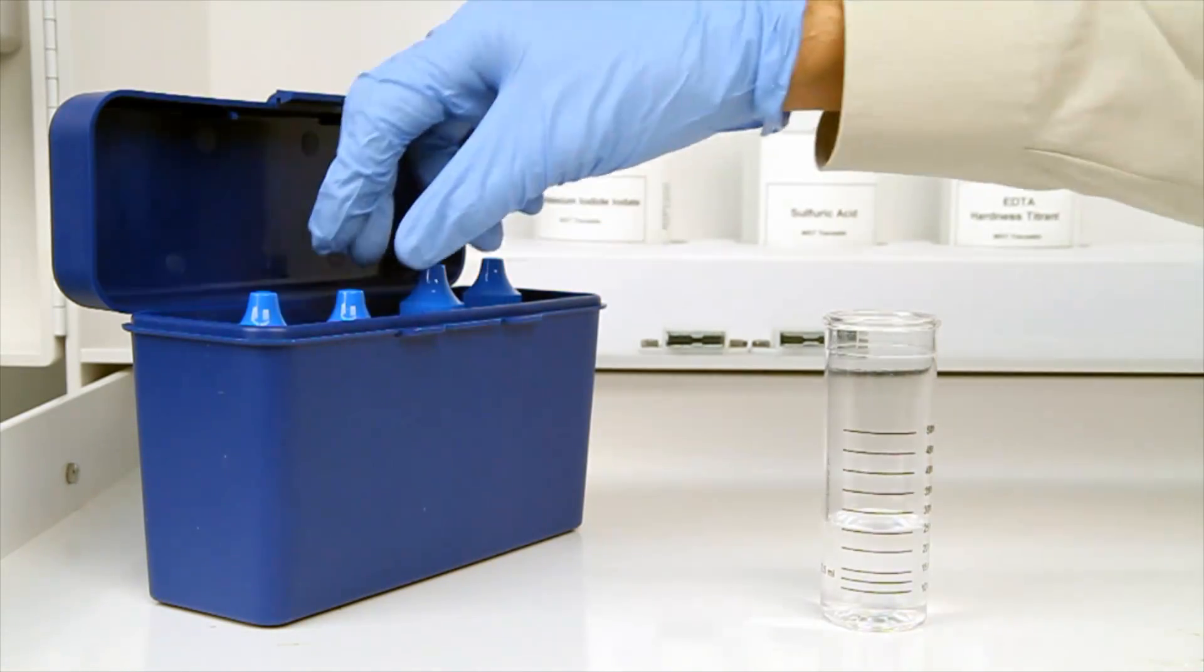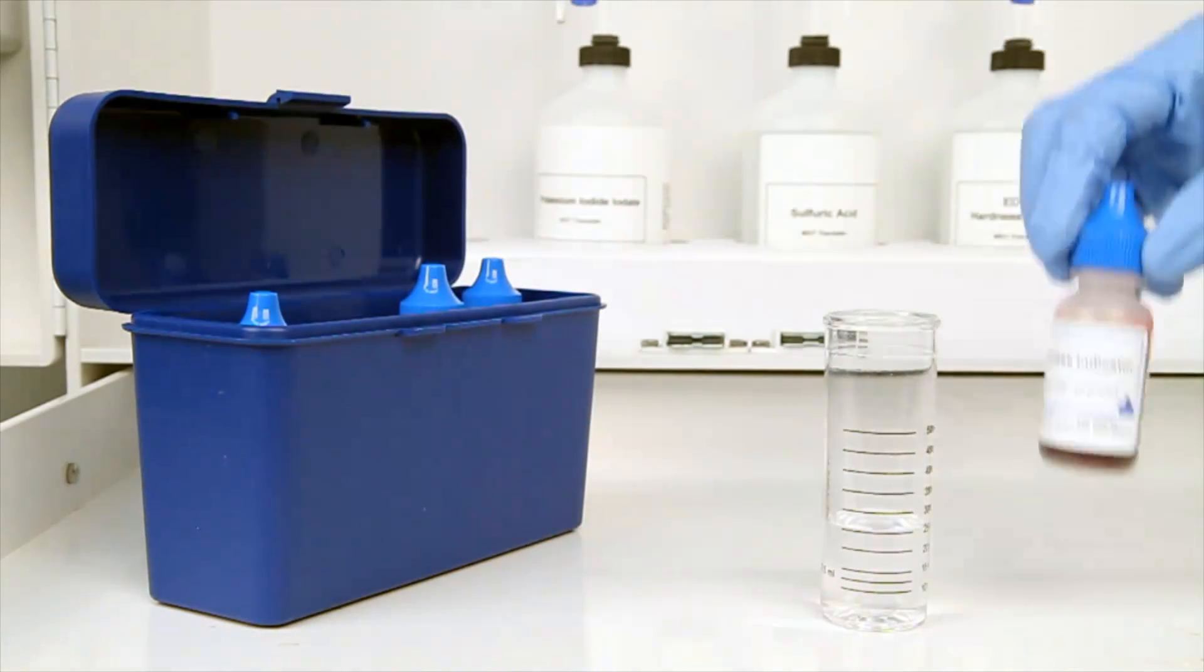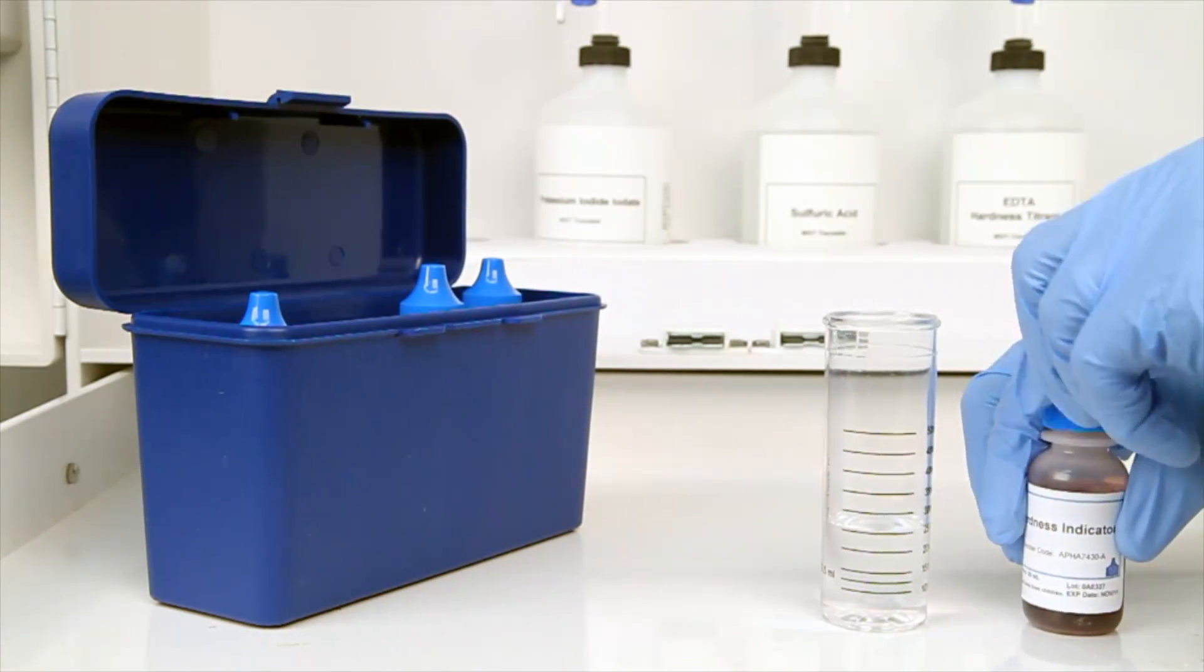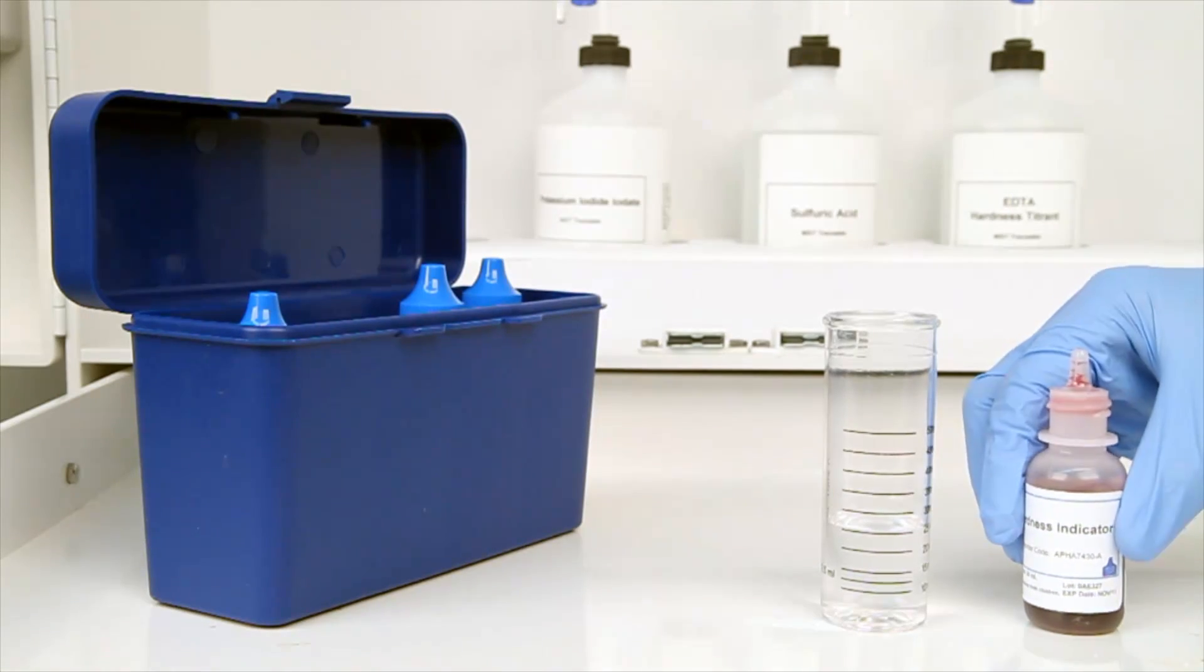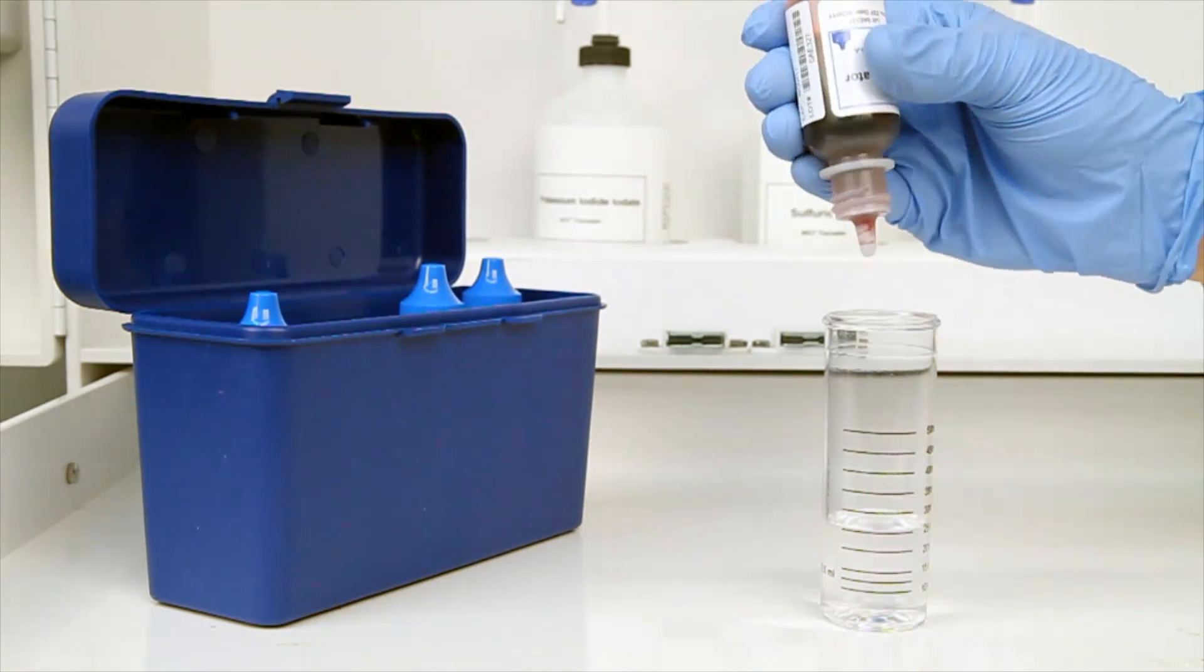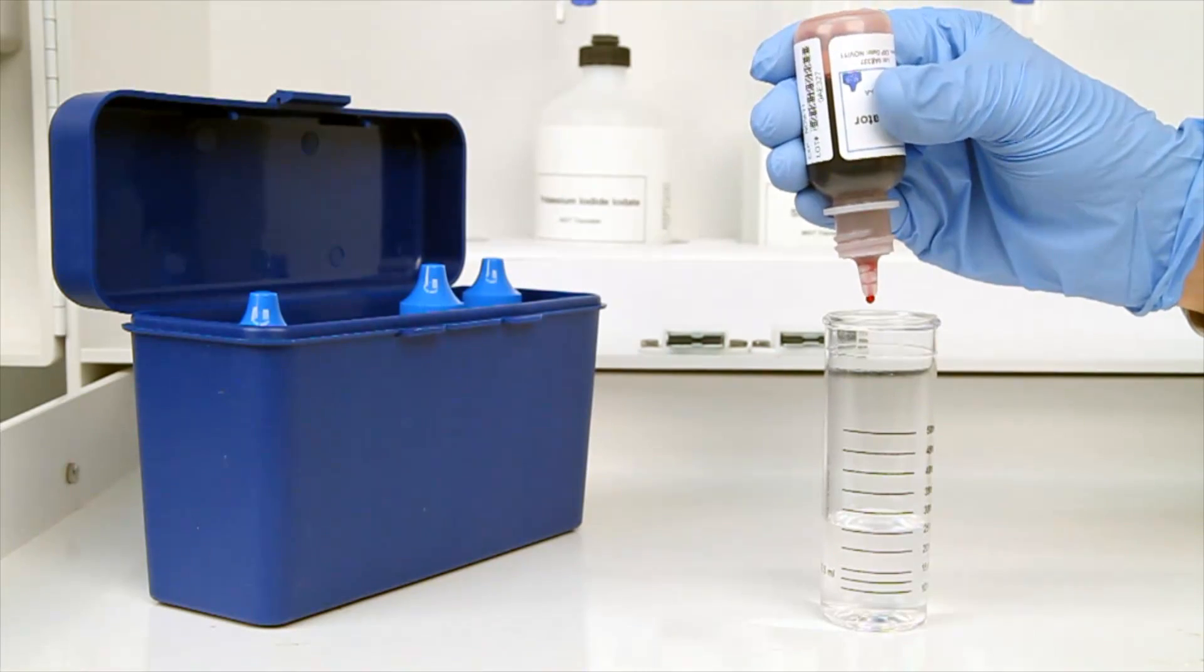The next step according to the Endpoint ID procedure is to add five drops of hardness indicator. Be sure to hold the bottle vertically to get a consistent drop size and remember to swirl the vial after the addition of each reagent.